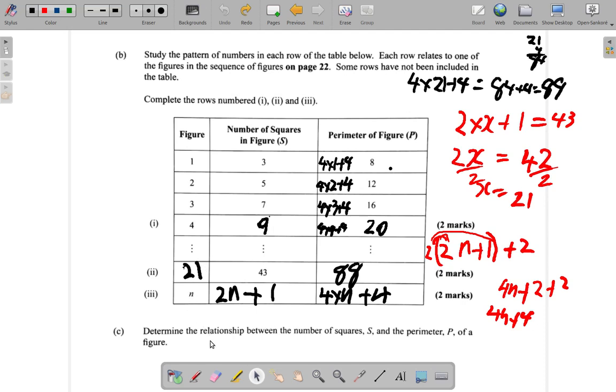So what we have is 2 times S, 2S, plus 2. And that is the relationship between the number of squares, S, and the perimeter, P, of the figure.